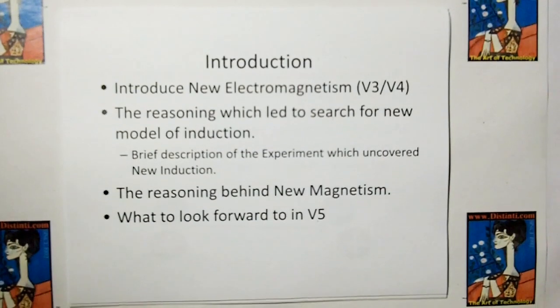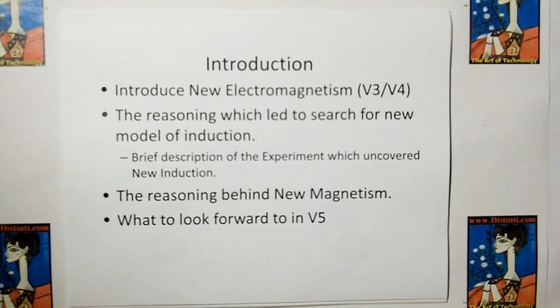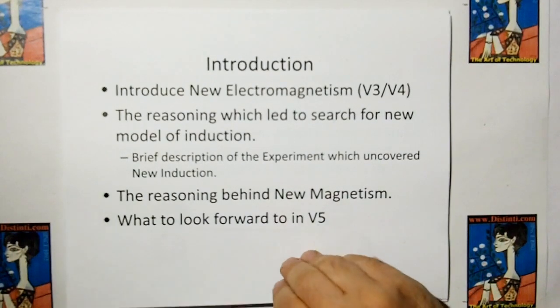In this we're going to introduce the new electromagnetism V3 and V4. We're going to explain the reasoning which led to the search for the new model of induction and the reasoning behind the new model for magnetism. Then we're going to look forward into version 5 models.